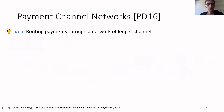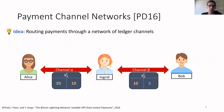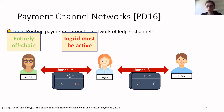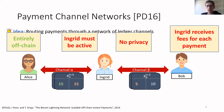In order to improve this solution, the notion of payment channel networks has been introduced, where we have a network of payment channels between Alice, Ingrid, and Bob, with channels alpha and beta. If Alice wants to make a payment to Bob, she can send a payment to Ingrid, and then Ingrid can forward that payment to Bob. This solution works entirely off-chain, but Ingrid must be active in each payment as she has to route it. Because of this, there's also no privacy since Ingrid learns the content and amount of transactions between Alice and Bob, and she requires a fee for each payment.